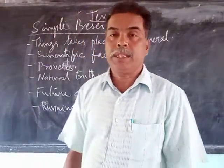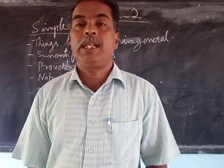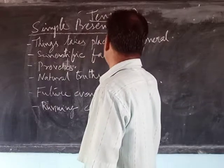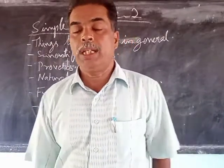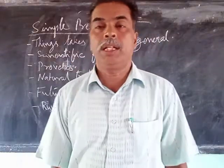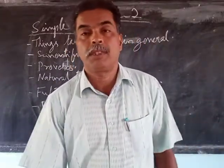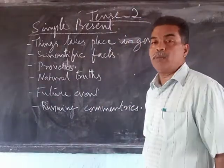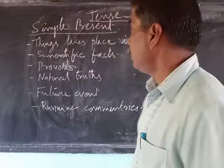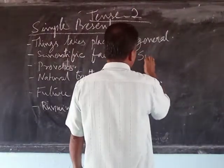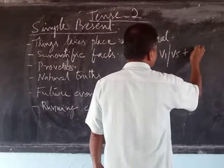Simple Present Tense is used to speak about an action that takes place at the present moment — things that take place in general. For example, 'I teach you English language,' or 'The COVID-19 pandemic spreads.' The structure of this sentence is: Subject + V1 or V5 (the verb) + Object.